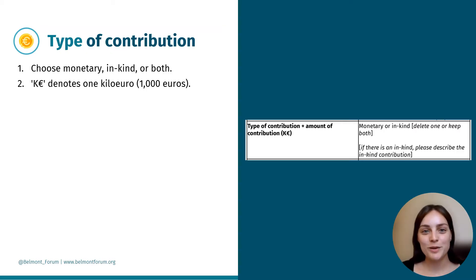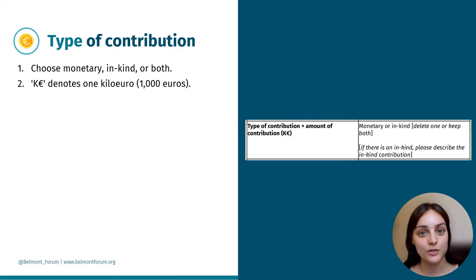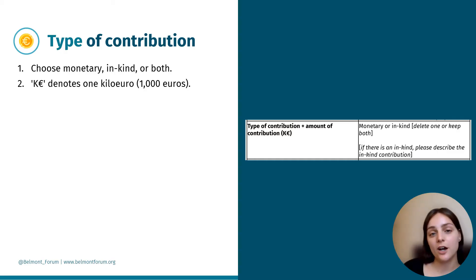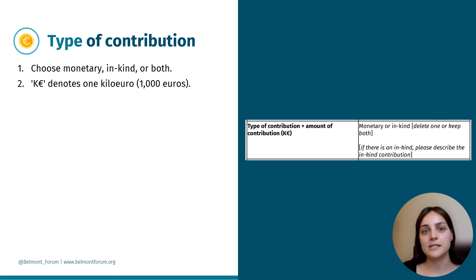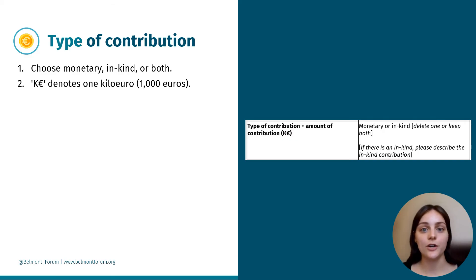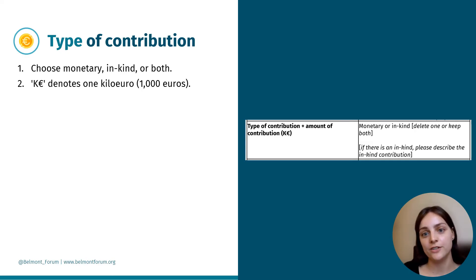Now let's talk about the fifth box: the type of contribution and amount of contribution. Choose monetary, in-kind, or both. If it's in-kind, describe the contribution — for example, equipment, expertise, or any other non-monetary resource such as access to data. The K euro in brackets denotes kilo euro, which means 1,000 euros. So for example, 5 kilo euros would be equivalent to 5,000 euros.